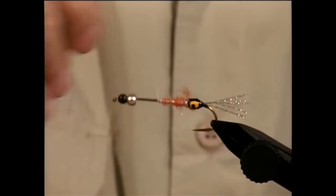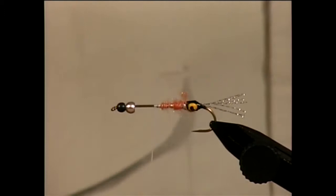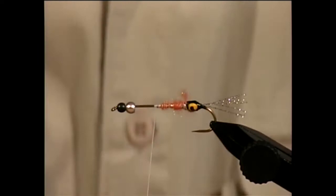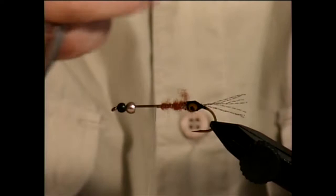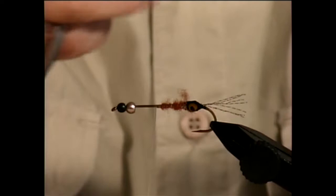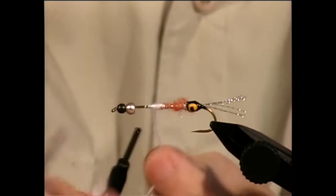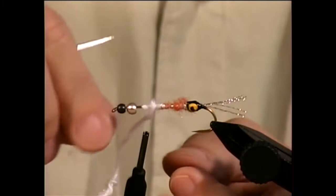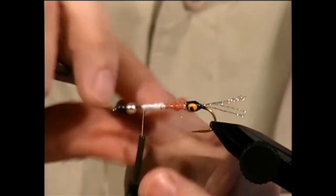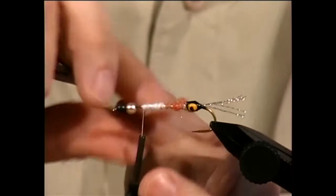Okay, trim away the excess, and the next material that I'm going to use is some white antron. I'm going to take some, it comes in four strands, and I'm going to skinny it down to about two strands, and tie that on right in front of the double magic, and wrap this body up to just behind the beads. And I want to build that up so it's about the same diameter as the back of the fly.